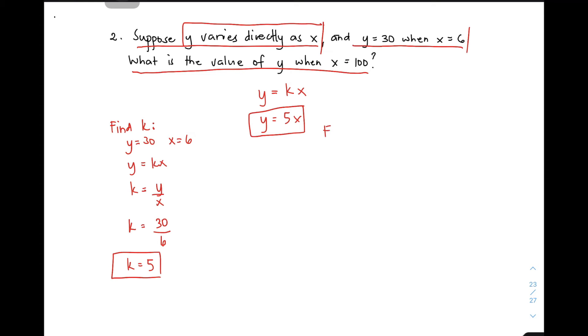To solve this problem, we use the equation Y equals 5X. Find Y. Given X is equal to 100, substitute 100 for X into Y equals 5X. You have Y equals 5 times 100. Simplifying gives you 500 as the value of Y. It's better to divide the problem into parts to make it easier.